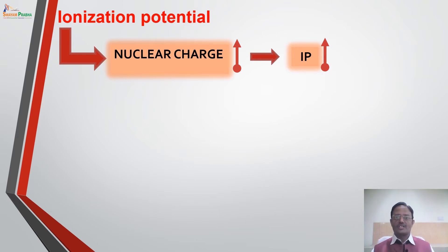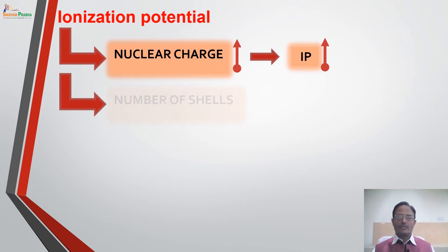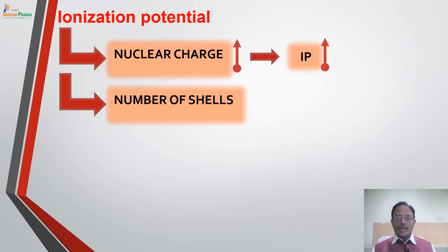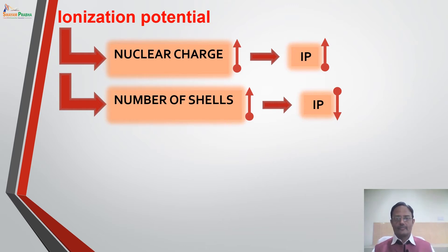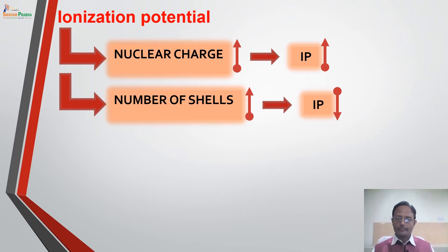The second factor which governs the ionization potential is the number of shells. If the number of shells are more, then the force of attraction between nucleus and outermost electron is less. Because if the number of shells are more, then the outermost electron will experience less force of attraction from the nucleus. In other words, ionization potential is inversely proportional to number of shells.